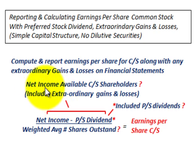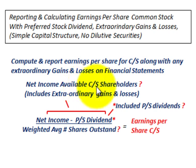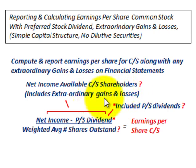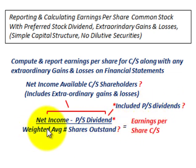Net income less our preferred stock dividend gives us the net income available to the common stock shareholders, and that's going to include some extraordinary gains and losses and how we'd have to break those out for determining our earnings per share. We also have to look at what is included in the preferred stock dividend, and then we'd also have to calculate the weighted average number of shares outstanding.